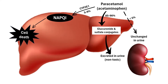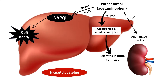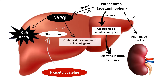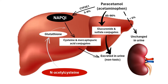N-acetylcysteine is the antidote for paracetamol overdose. When administered promptly after an overdose, it helps to restore depleted glutathione stores. By increasing the availability of glutathione, N-acetylcysteine facilitates the detoxification of NAPQI, thus preventing further liver damage.